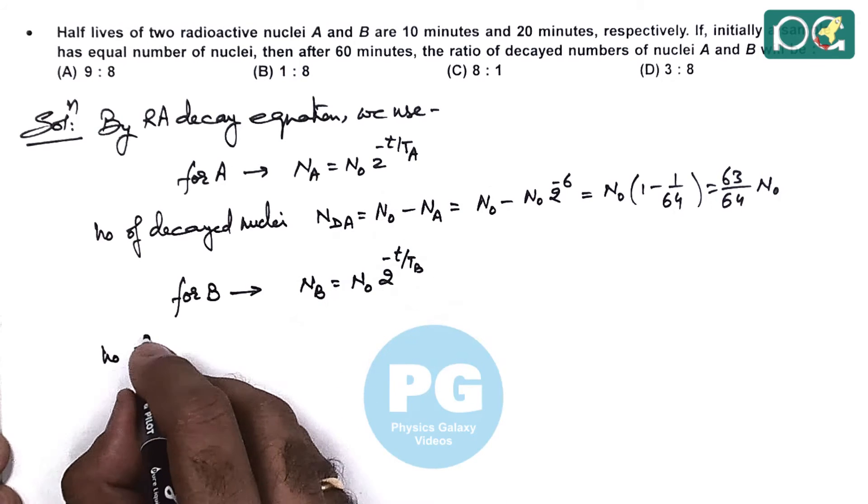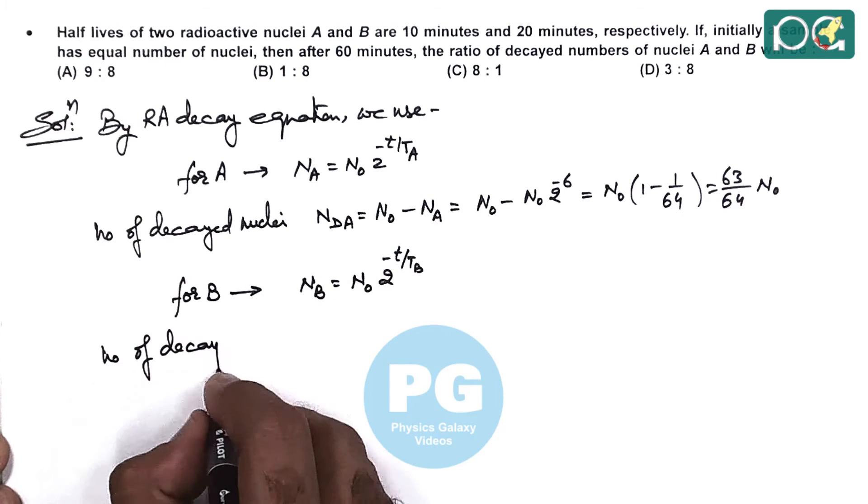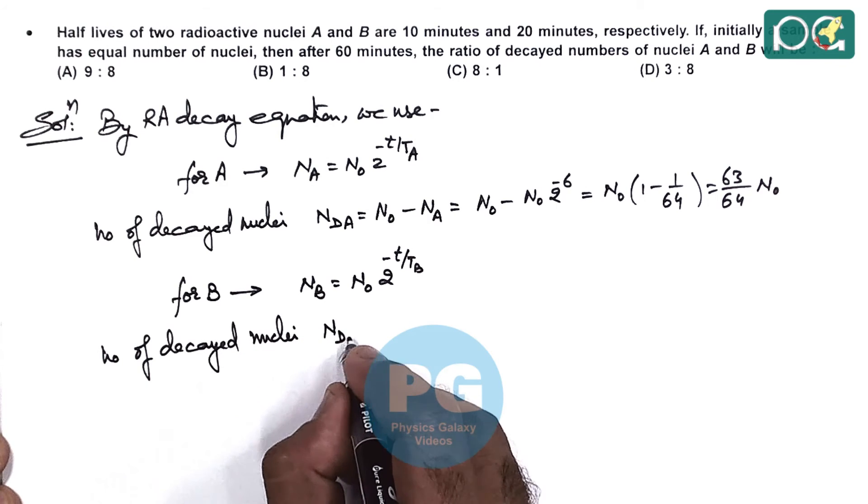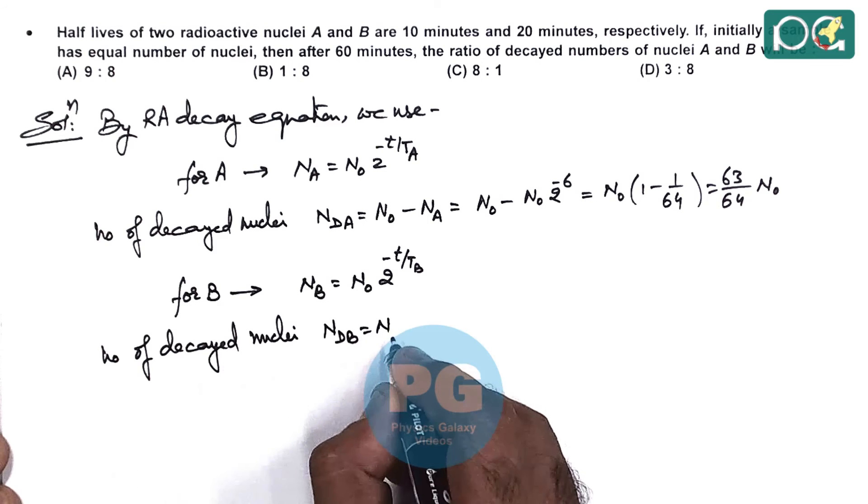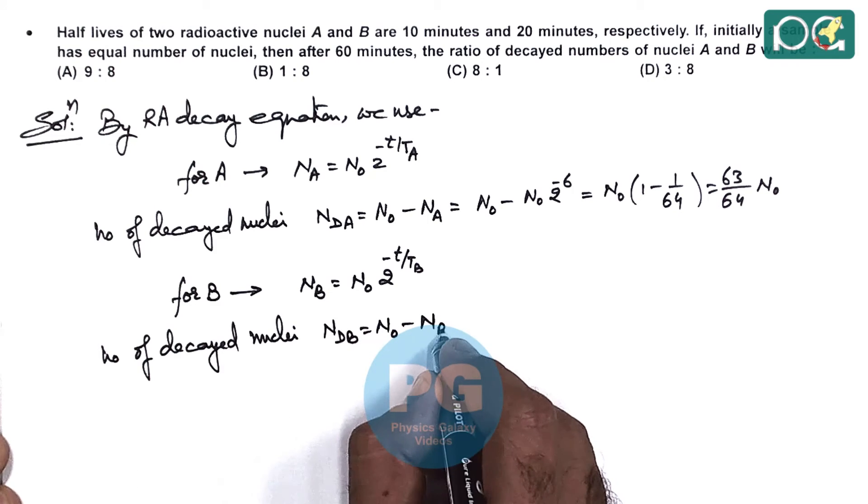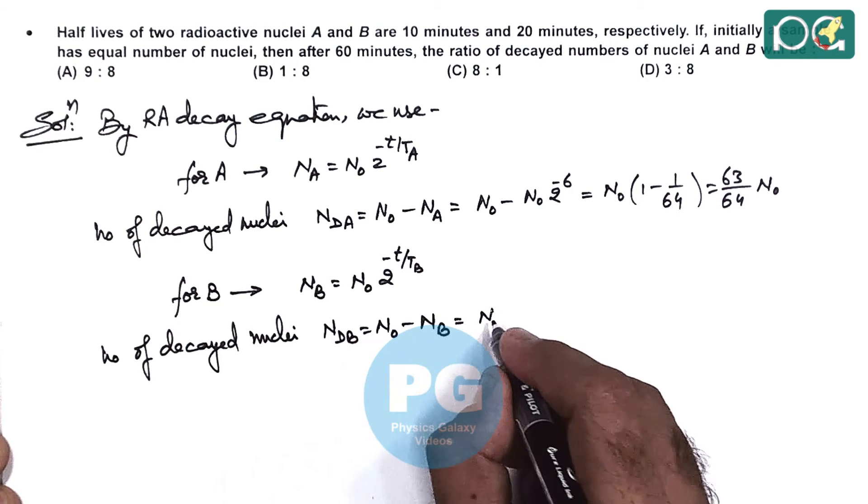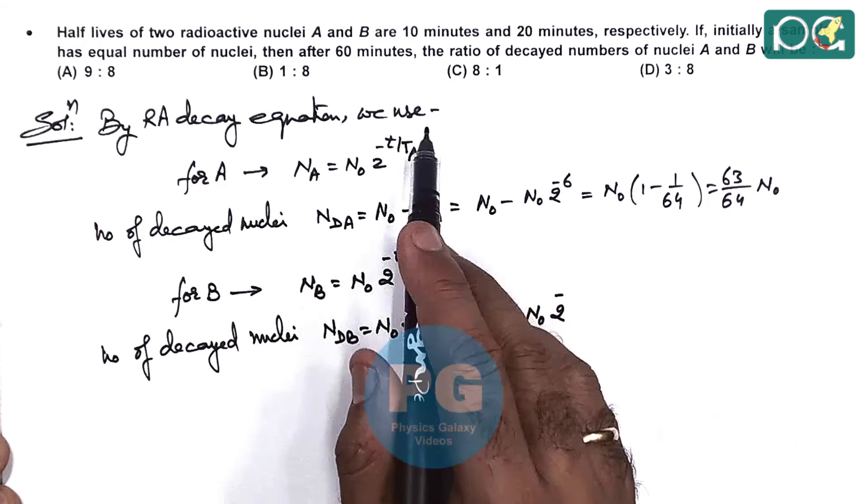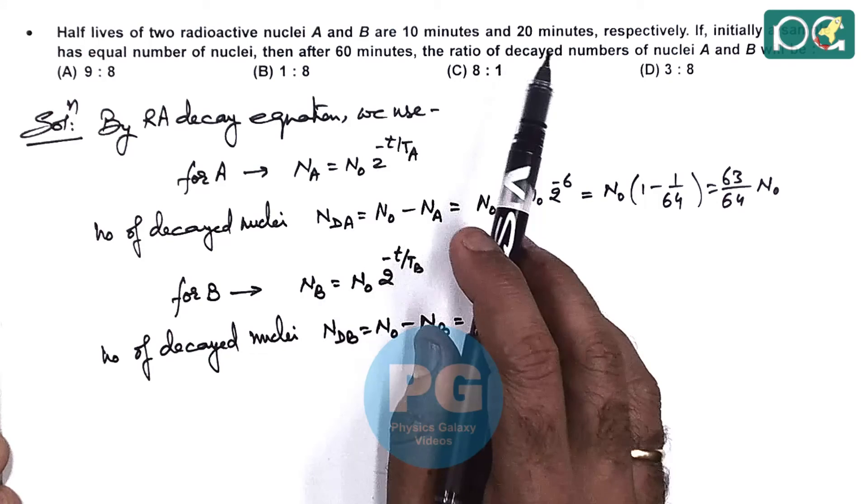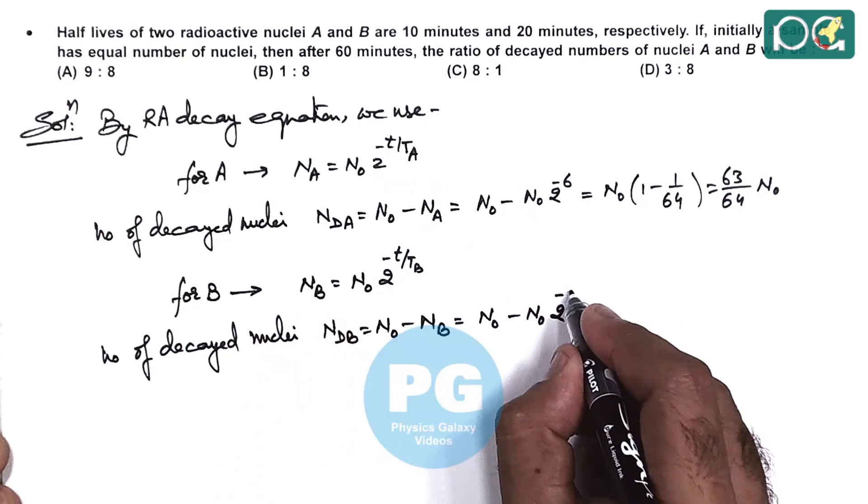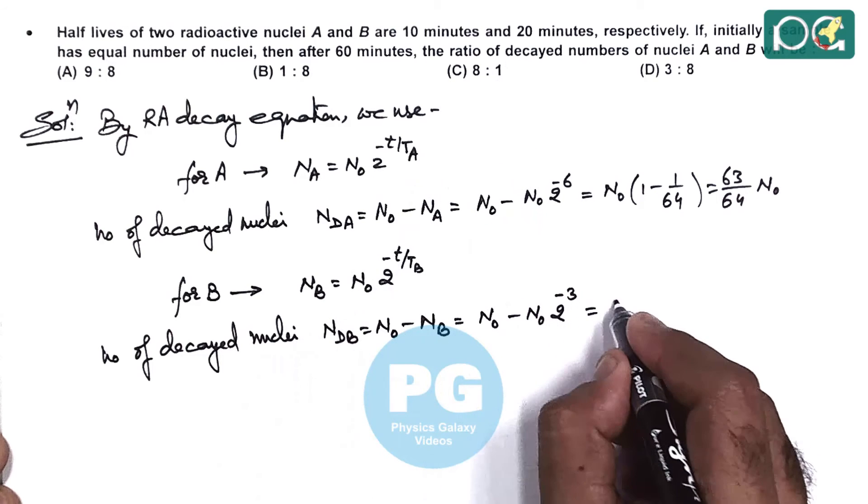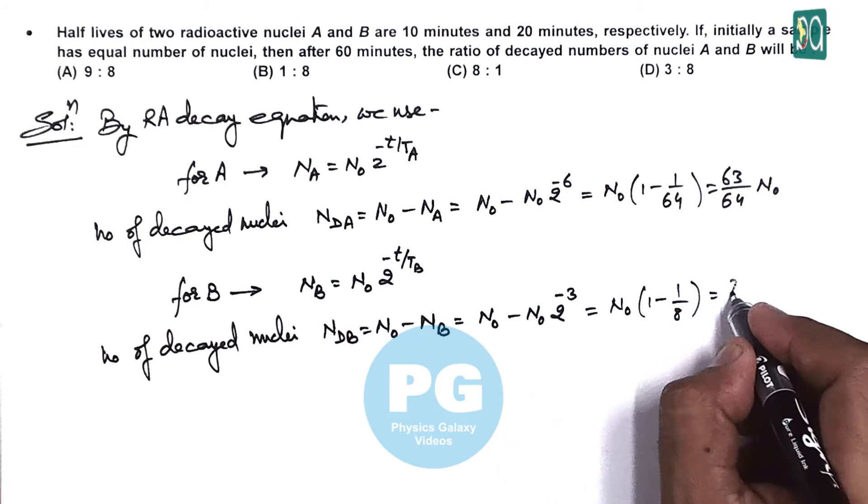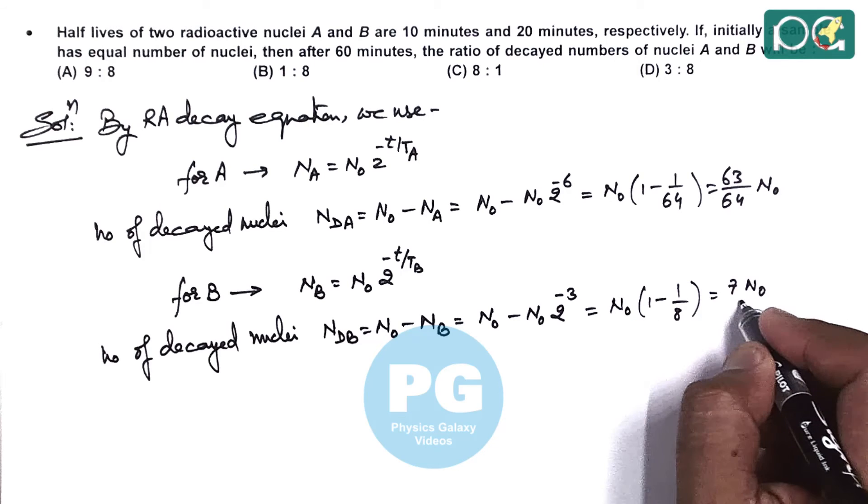And the number of decayed nuclei of B, we can write as N0 minus NB, which is N0 minus N0 times 2 to the power minus, here it's 60 by 20, so minus 3. This gives N0 times (1 minus 1 by 8), which gives 7 N0 by 8.